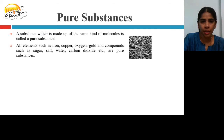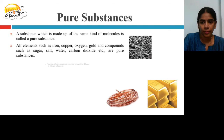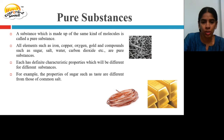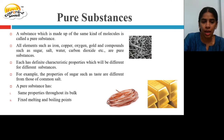Iron consists of the same kind of molecules, and the entire copper wire is copper. Each pure substance has definite characteristic properties which differ for different substances. For example, the taste of sugar is different from that of common salt. A pure substance has the same properties throughout its bulk, fixed melting and boiling points, and definite density.